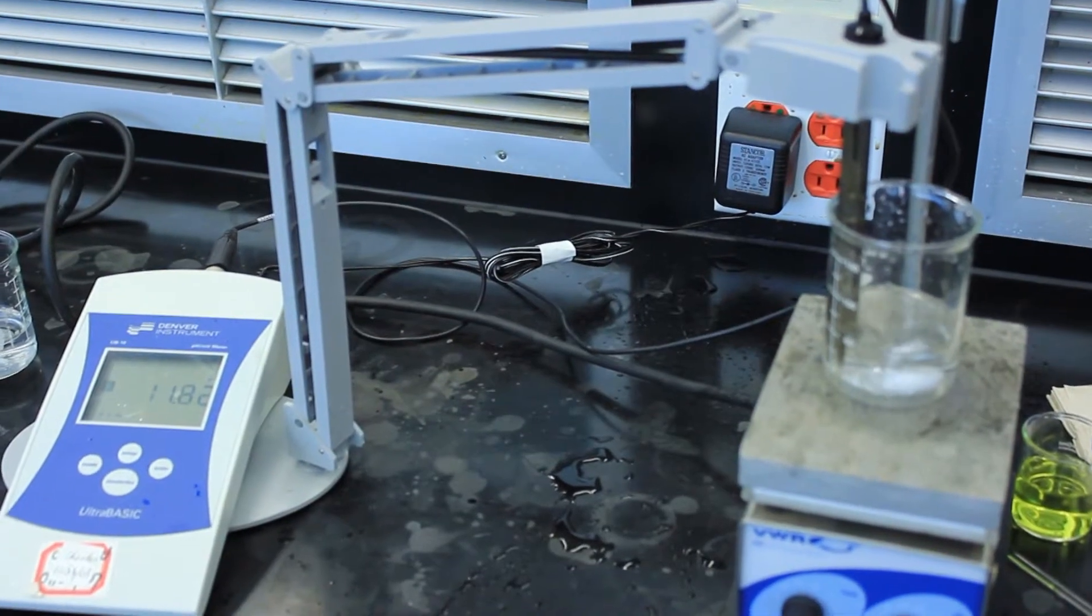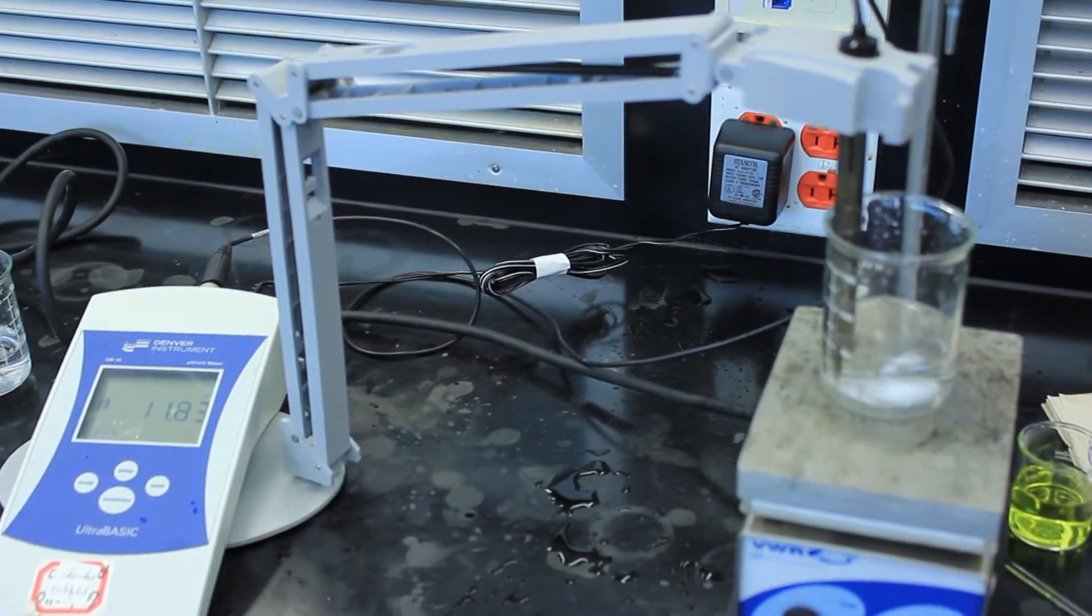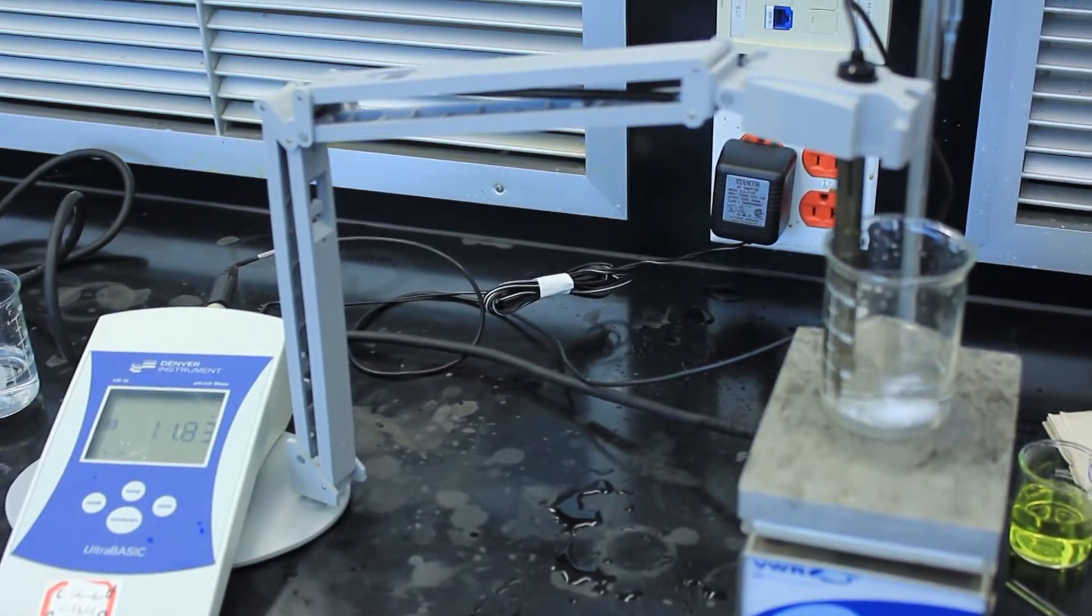If you shoot past your equivalence point without ever getting close to it, rinse out the nitric acid, get some more, and repeat the titration.